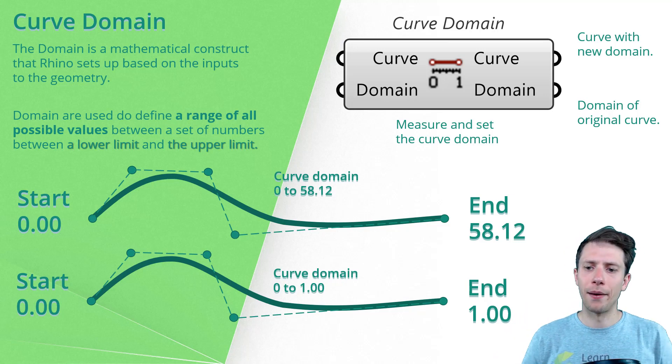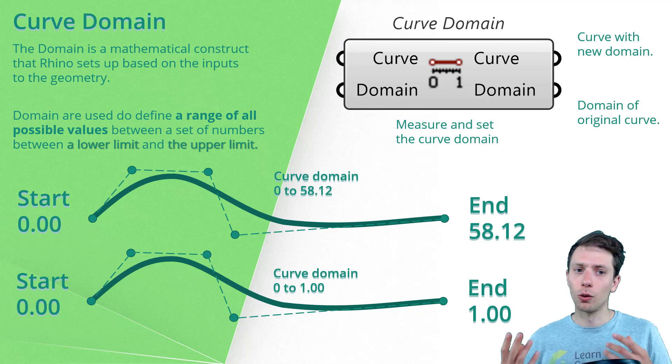So you can actually check what is the actual base original domain of the curve. Here in the picture right now, you can see two curves which are exactly the same curves. When we speak about geometry, we have the same number of control points and the same degree. So everything is the same, but you will see that the curve domain is different. The first one is from zero to 58.12.